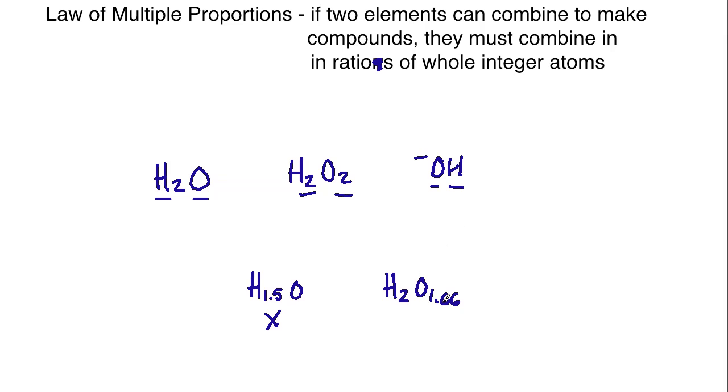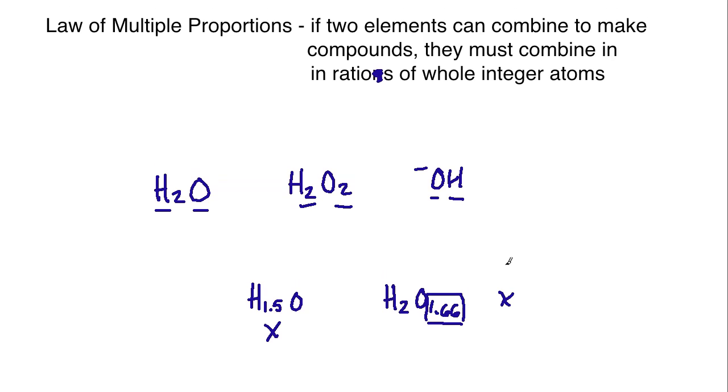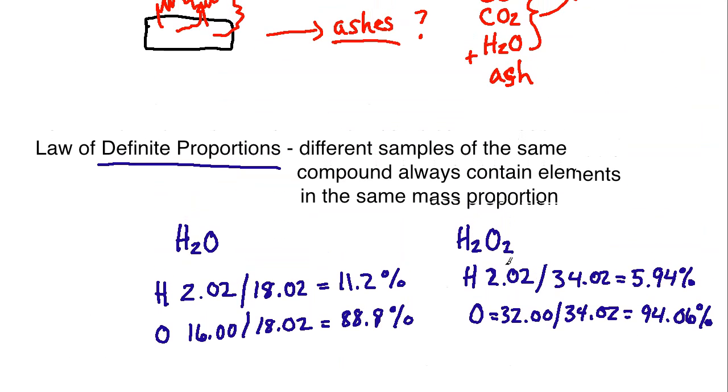Some people get confused when determining empirical formulas and molecular formulas because you might come up with fractional values. But remember, the rule says you have to multiply by a whole number to get the nearest set of whole integers. You would multiply by three or two or whatever it might be. That evens it out so you get whole integers. They do not allow you to remain in a fractional state.